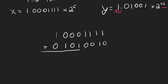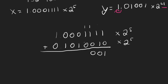Now we perform the addition, writing both values with 2 to the fifth. Adding the bits: we get 1, then 0 carry 1, 0 carry 1, 0 carry 1, 0 carry 1, then 1, 1, and 1 — giving us our final result times 2 to the fifth.